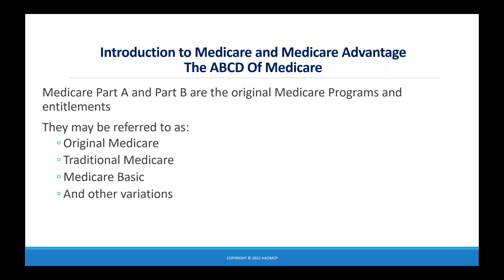Medicare Part A and Part B are the original Medicare programs. Remember from earlier, we talked about Title 18 and 19 of the Social Security Act back in the mid-60s when Medicare was developed. You may hear it referred to as original Medicare, traditional Medicare, Medicare Basic, and other variations — but it is Medicare Part A and Part B, the original parts of Medicare.